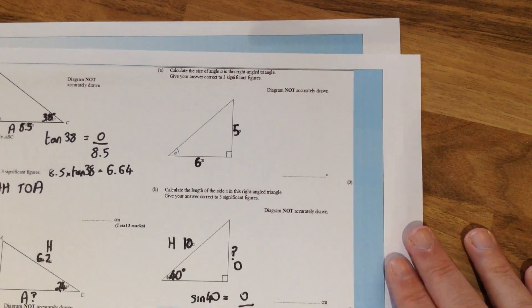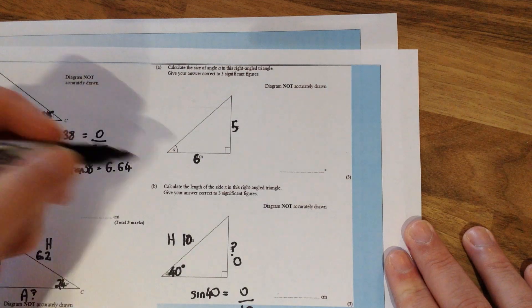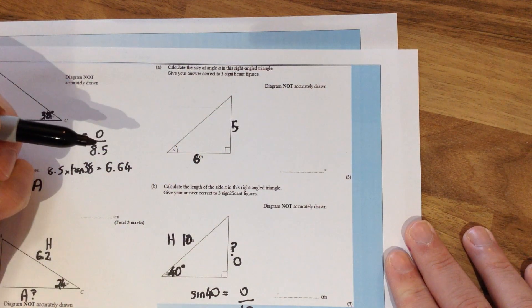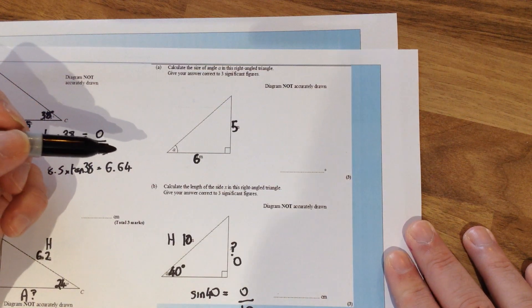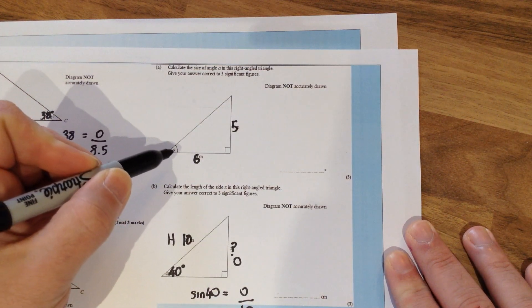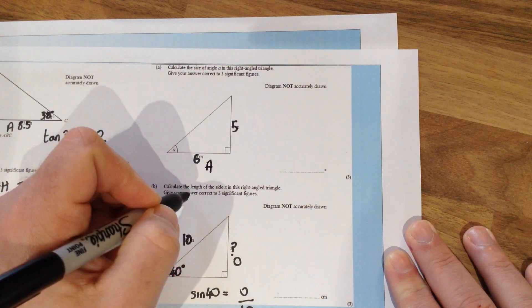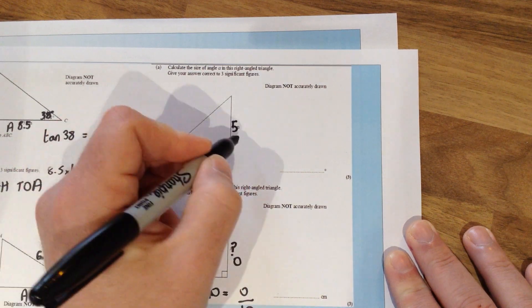Now this question just up at the top is a little bit different because here we've been given two sides and we're trying to find the angle here. So if we start off the exact same way and label up the sides. If this is the angle, this side here is just next to it so that is the adjacent and over here we would have the opposite.